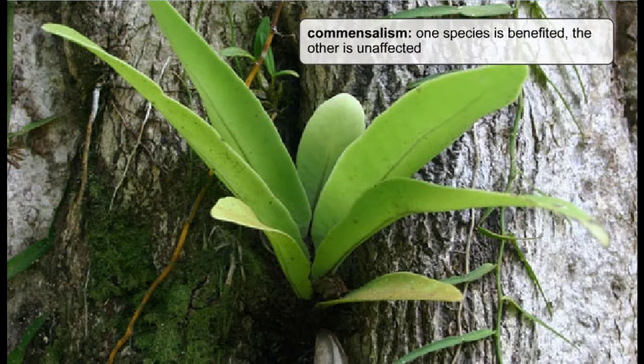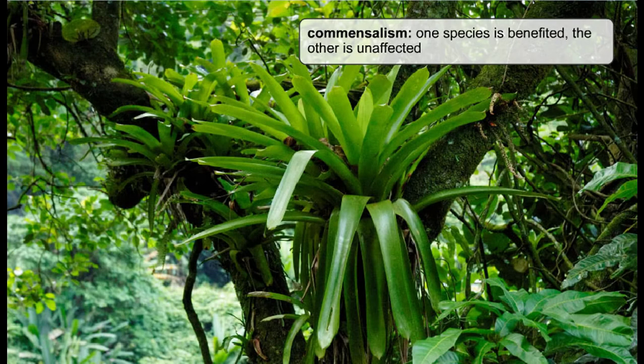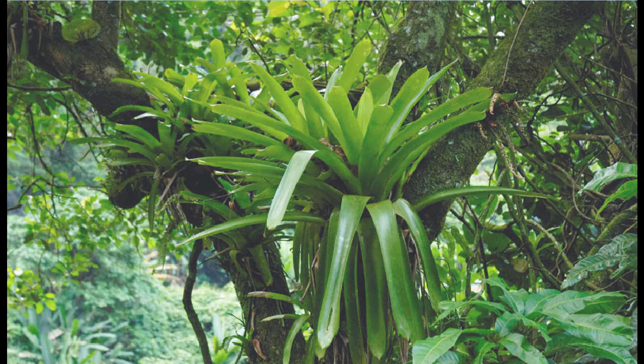In commensalism, the association is beneficial to one species, while the other species receives neither benefit nor harm, such as epiphytes living in trees in the jungle. The epiphytes are able to grow higher off the ground and get more sunlight, but they do not affect the tree they are growing on.